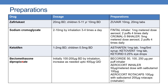The next drug is beclomethasone dipropionate. Initially 100 to 200 mcg twice daily by inhalation, increased as needed up to 400 mcg 4 times daily. The preparations are Pecoride, available as 50, 100, and 250 mcg per puff inhaler, Aerocot inhaler containing 50 mcg per metered dose with salbutamol 100 mcg, and Aerocot rotacaps containing 100 mcg with salbutamol 200 mcg rotacaps.